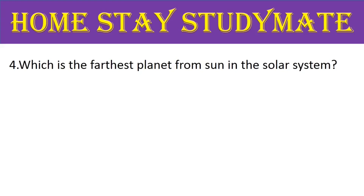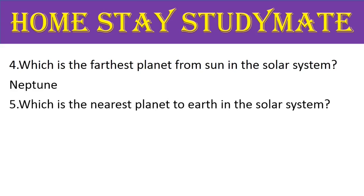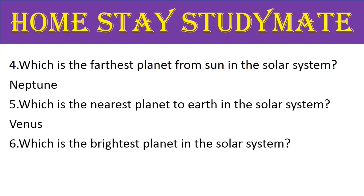Question number 4: which is the farthest planet from the Sun in the solar system? The right answer is Neptune. Next, question number 5: which is the nearest planet to Earth in the solar system? The right answer is Venus.